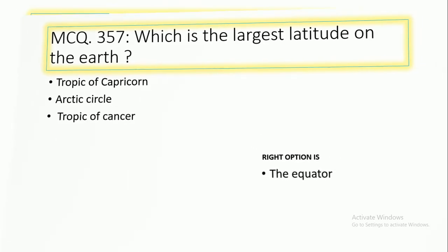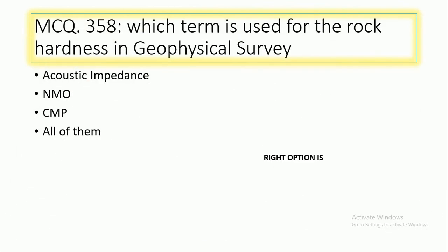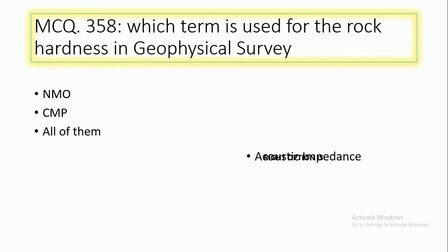MCQ number 358: Which is used for rock hardness in a geophysical survey — acoustic impedance, NMO, CMP, or all of them? The right option is acoustic impedance.